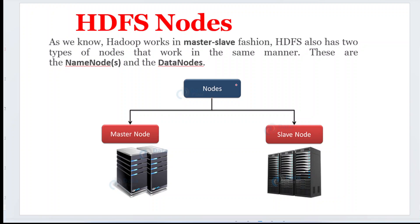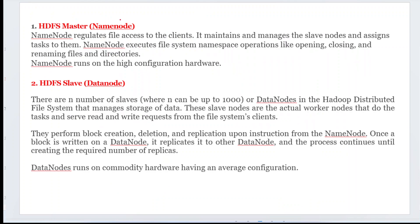The name node is called the master node. This master node is the completely controlling node — it controls many slave nodes. Here we see three slave nodes, but you can extend to many more. The master node is completely responsible only for storing metadata information, whereas all the actual data is stored in the slave nodes. The master node also regulates all file access to the clients.